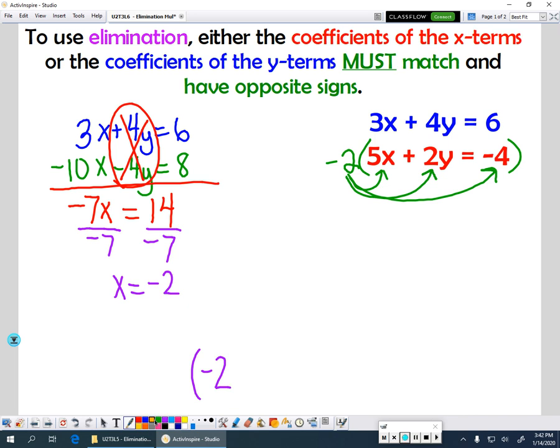Now to finish off this problem, I need to find the y value. I'm going to start with one of my equations, doesn't matter which one. And then I'm going to take this value of negative 2 here, and I'm going to plug it into x because that's what x equals. So I'm going to replace that x with my value of negative 2. So I'm going to have 3 times negative 2. And then the rest of this equation plus 4y equals 6.